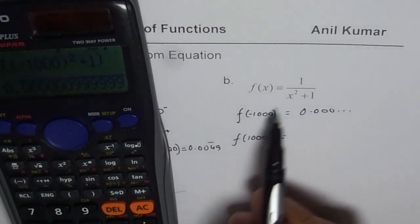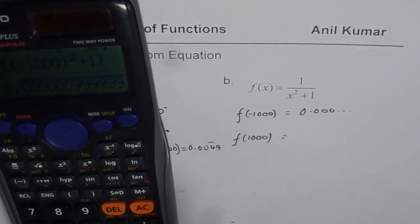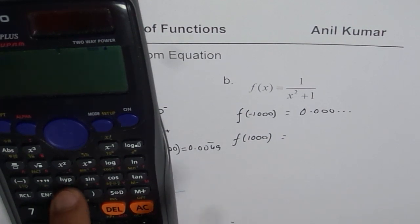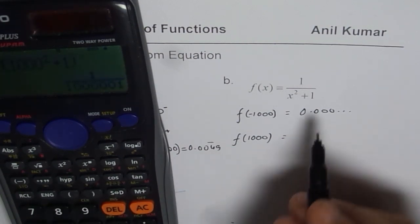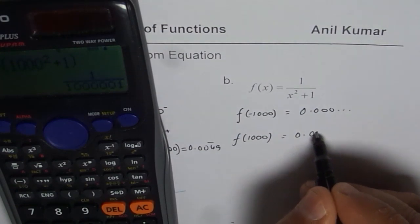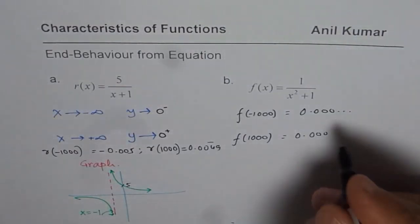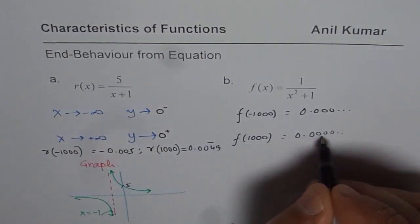If I replace this with plus 1,000, then what happens? Then also, we get 1 divided by within brackets, 1,000 squared plus 1. So we will get the same value. It is kind of 0.000 something. Very, very close to 0.